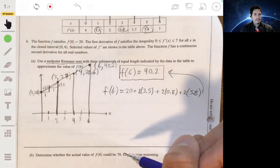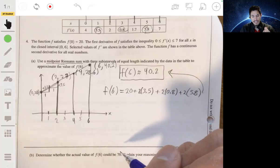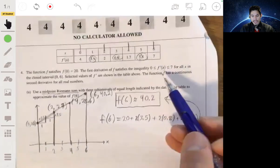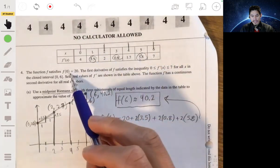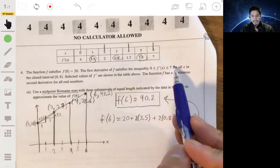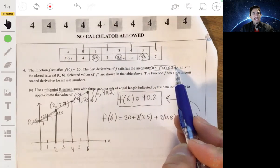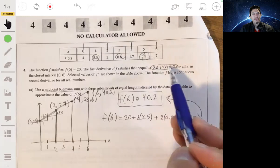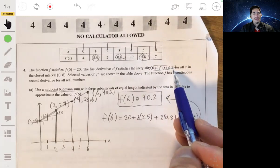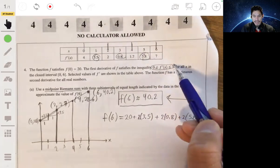But we can determine that it won't be 70 because if you look at what it says here, it says the derivative of f prime of x is going to be from 0, but no more than 7.